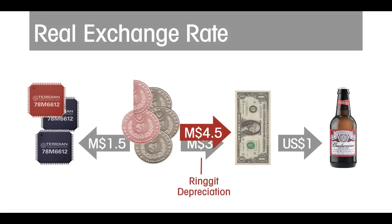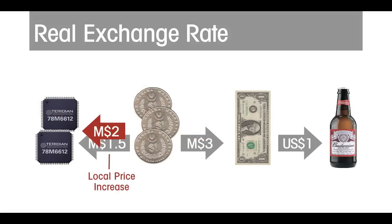For the final exercise, suppose that the price level rises in Malaysia, but there is no nominal depreciation and no change in US prices. Let's say that as a result of the rising Malaysian price level, chips can now be sold for 2 ringgits instead of the previous 1.5. At this new price level, it would require the production of only 1.5 chips sold at 2 ringgits each in order to raise the 3 ringgits needed to import an American beer. However, the smaller requirement in terms of chips reflects a real appreciation for Malaysia, insofar as its production can now obtain a larger amount of international goods.